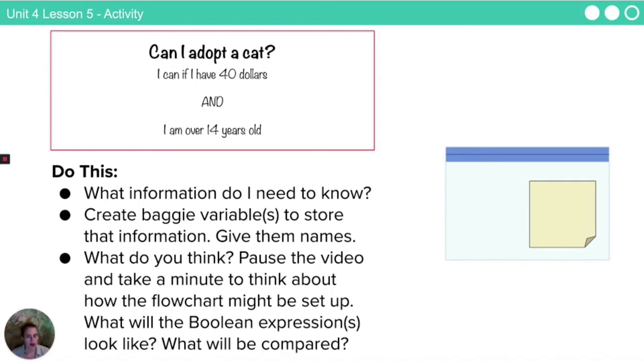Think about what information you need to know. Go ahead and create variable bags to store that information. Give them names and then decide what your flowchart would look like. How would you set it up?